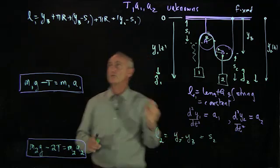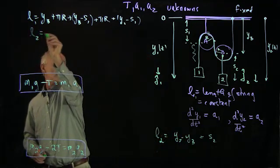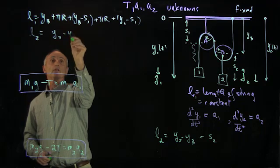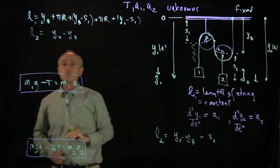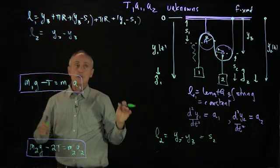So we now have two string lengths, l2 equals y2 minus y_b. And both of these string lengths are constant.